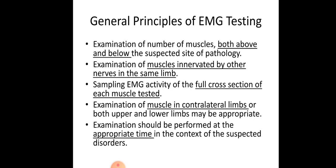Second point: examination of muscles innervated by other nerves in the same limb. For example, since the musculocutaneous nerve supplies biceps brachii, we must also assess other muscles supplied by the same nerve, such as coracobrachialis.